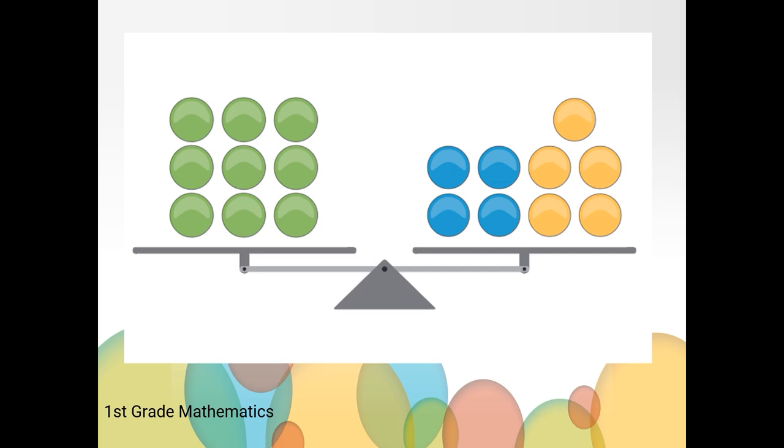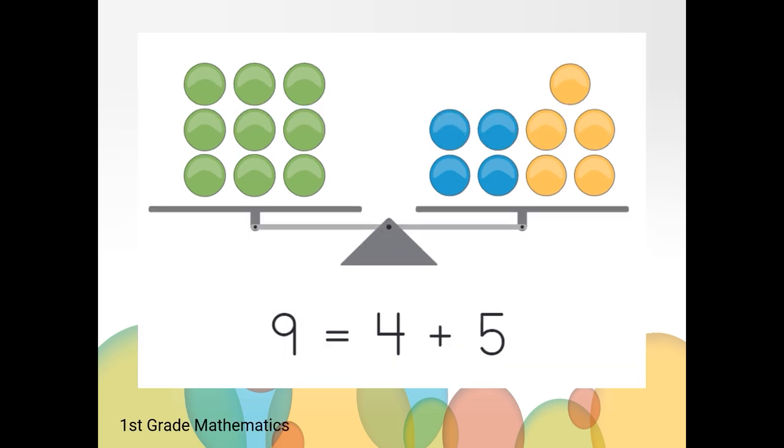Did you write your thinking down on your piece of paper? If not, go ahead and write your thinking down on your piece of paper. There are nine green circles on one side of the balance scale. On the other side of the balance scale, there are four blue circles and five orange circles. Nine equals, or is the same as, four plus five.